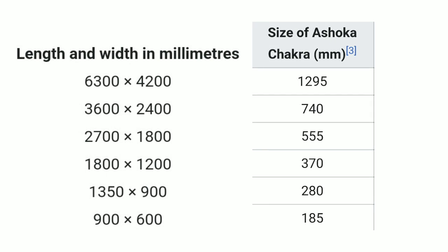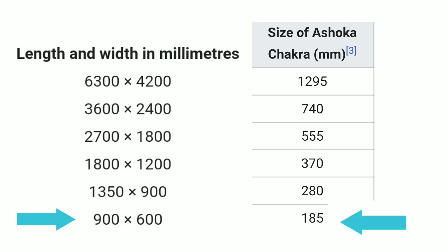If you look at the chart of the sizes of the national flag, the size of the Ashoka Chakra should be as follows: if the size of the national flag is 900 by 600 millimeters, then each strip is of width 200 millimeters, so the size of the Ashoka Chakra must be less than 200 millimeters. The standard size is 185 millimeters. That's all about the design and dimensions of our national flag.